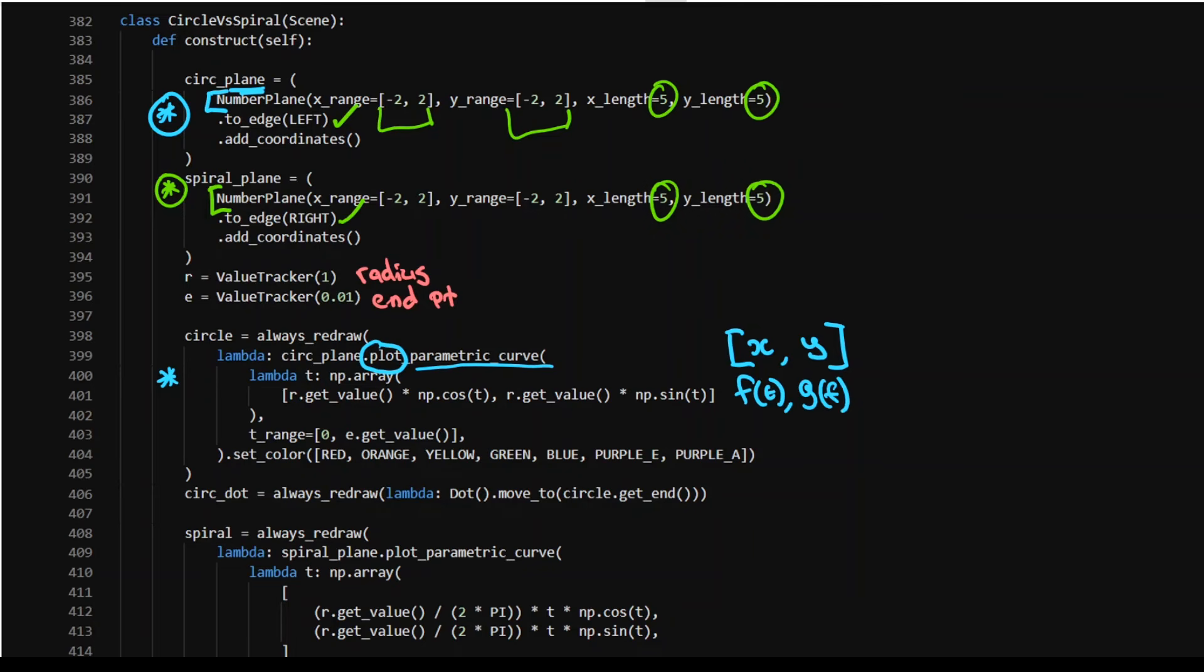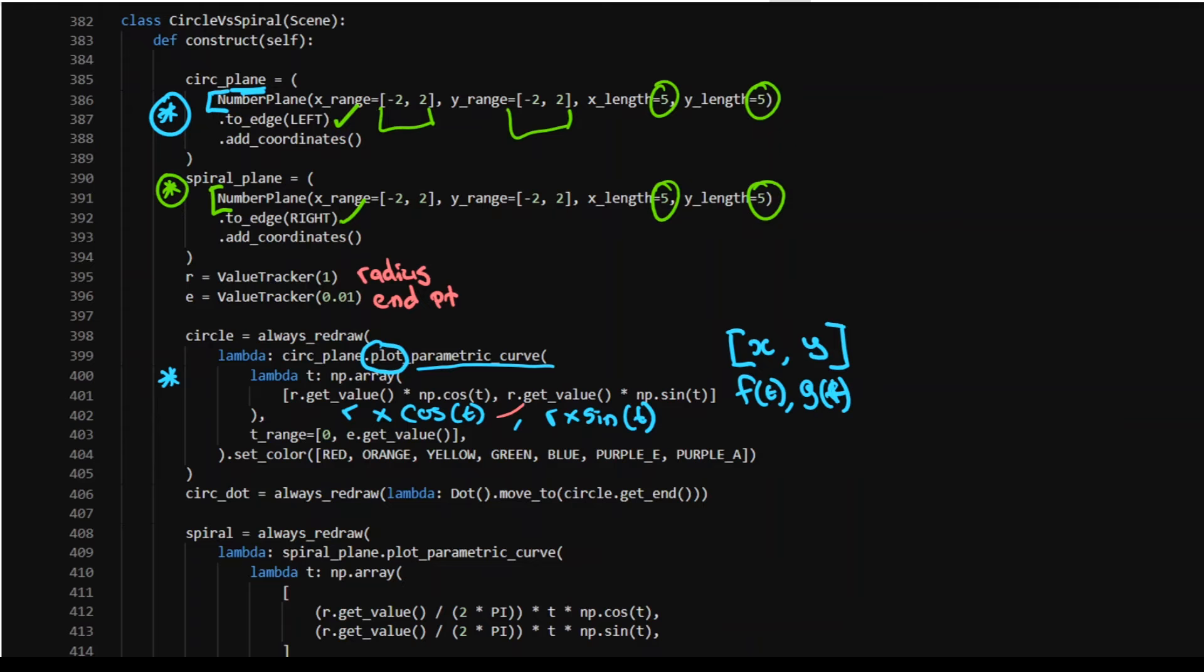But it is typically another function of T. So F of T and G of T to give you your Y coordinate and your X coordinate with respect to time moving onwards. Now, in our case here for the circle, it's just R times by cos of T, comma, R times by sine of T. And my R value is being tracked by my value tracker.